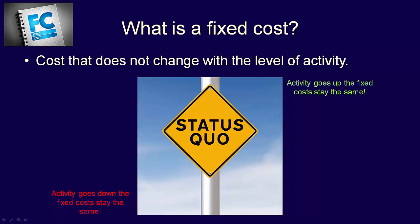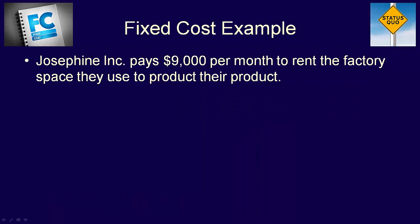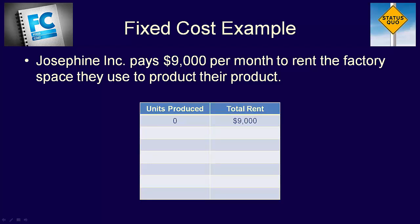Let's go back to the example of Josephine Inc. to see how this plays out. Josephine Inc. pays $9,000 per month to rent the factory space they use to produce their product. If the company produces zero units, what will the total fixed cost be? A total of $9,000. What if the company produces one unit? Still $9,000 of total fixed costs. Fixed costs do not change with the level of activity.